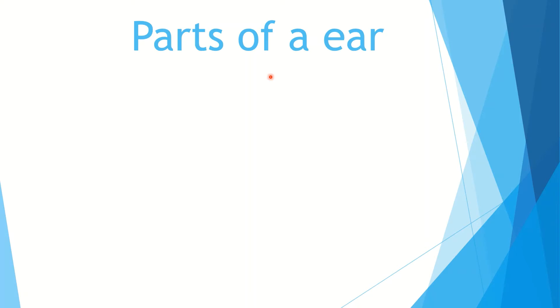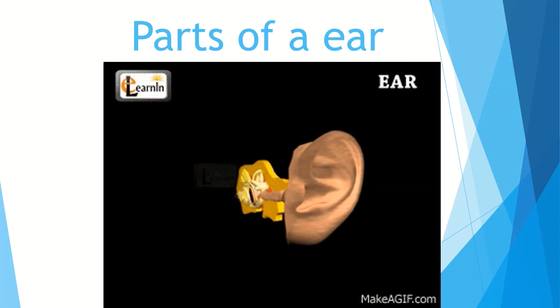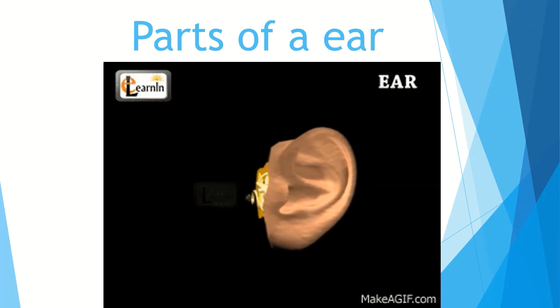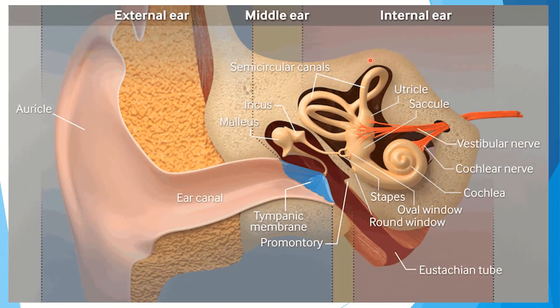We have learned about the eye. Now we will discuss the ear. First, we will discuss about the parts of the ear. The three main parts of the ear are the external ear, the middle ear, and the inner ear.